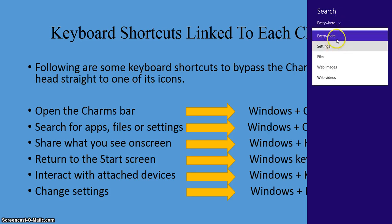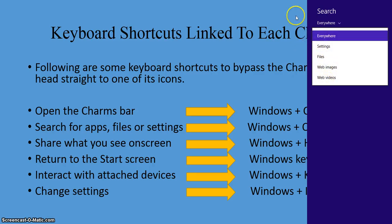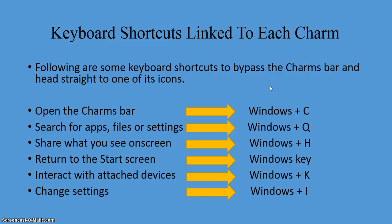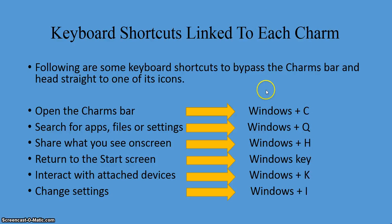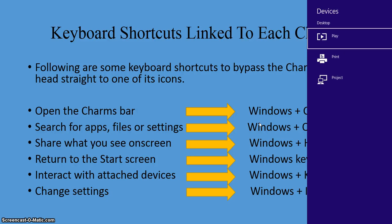From the search screen you can search everywhere, search settings, files, web images, or web videos. If you want to share what you have on the screen, the keyboard shortcut is Windows key plus the H key — and that's what pops up. To return to the start screen, just press the Windows key alone. To interact with your attached devices, press Windows key plus the K key — and right now this is what comes up on my end, as that's all I have connected.